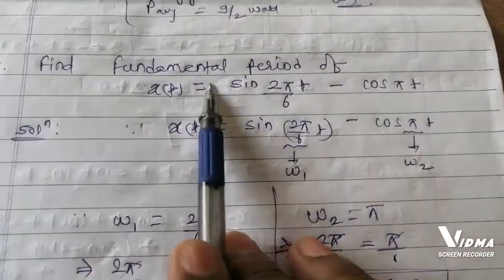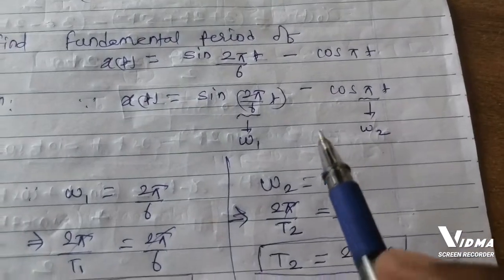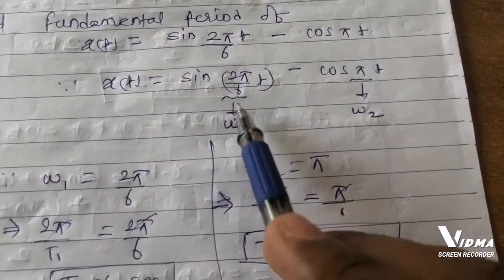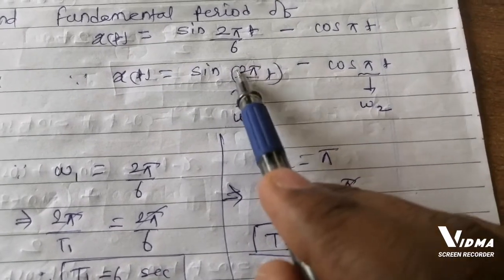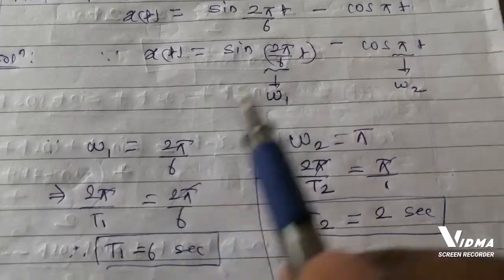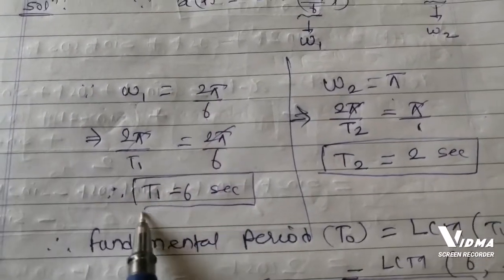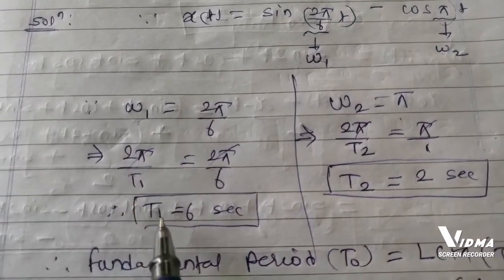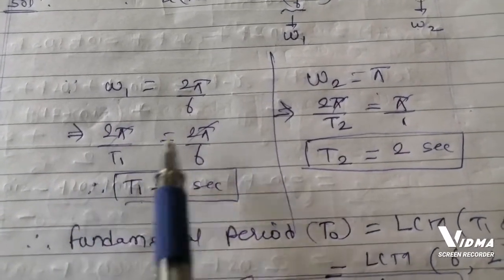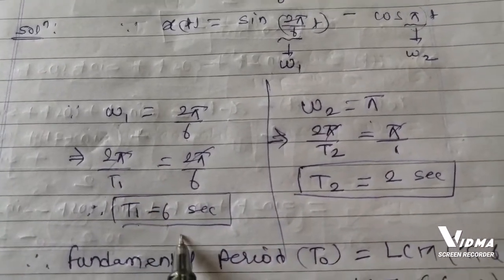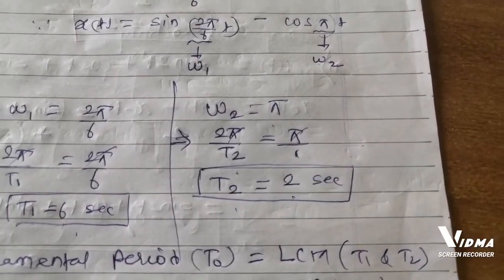Find the fundamental period of x(t) = sin(2πt/6) - cos(πt). Again we identify the angular frequencies: omega 1 = 2π/6 and omega 2 = π. Using omega = 2π/T, we get T₁ = 6 seconds and T₂ = 2 seconds by cross multiplication.